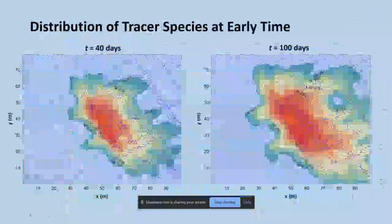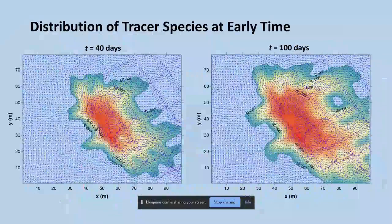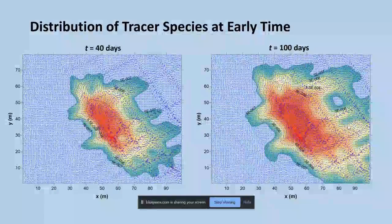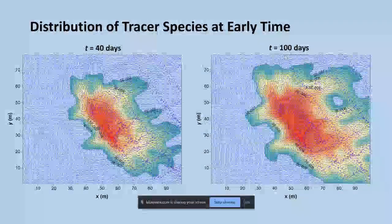These are all initial conditions. This is the distribution of the tracer species—we're using bromide for after 40 days of injection over here on the left and then after 100 days of injection over here on the right.